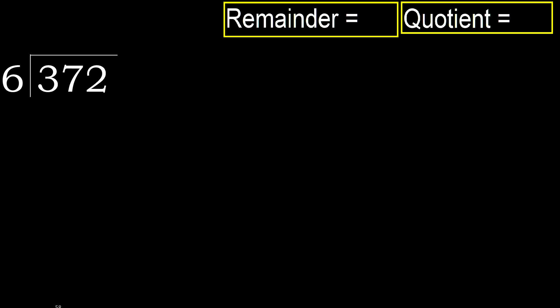372 divided by 6. 3 is less, therefore next. 37 is not less, therefore with 37 — 6 multiplied by which number is nearest to 37, but not greater.